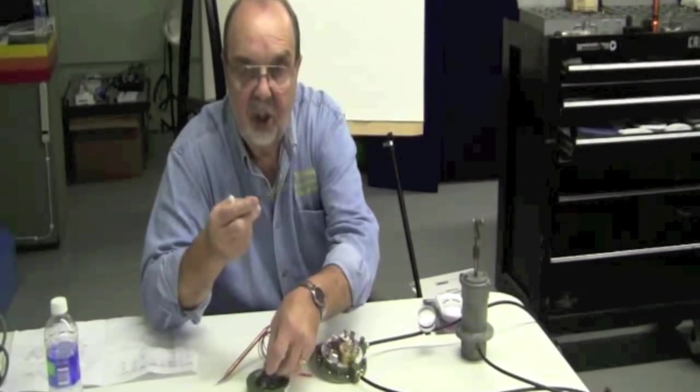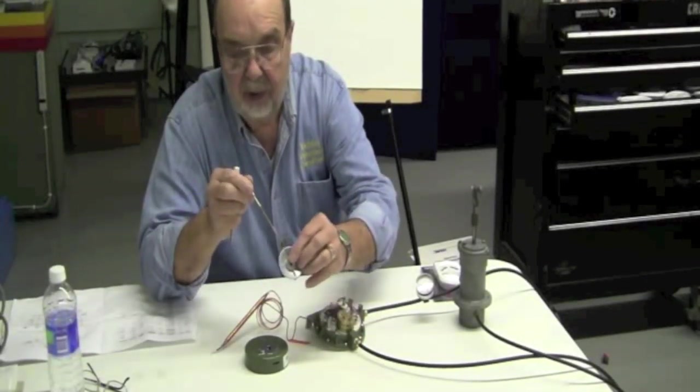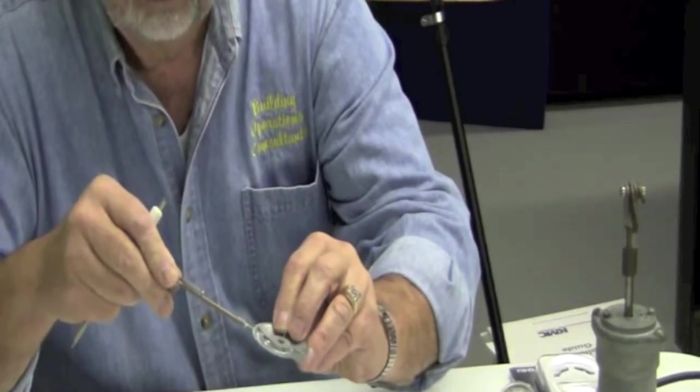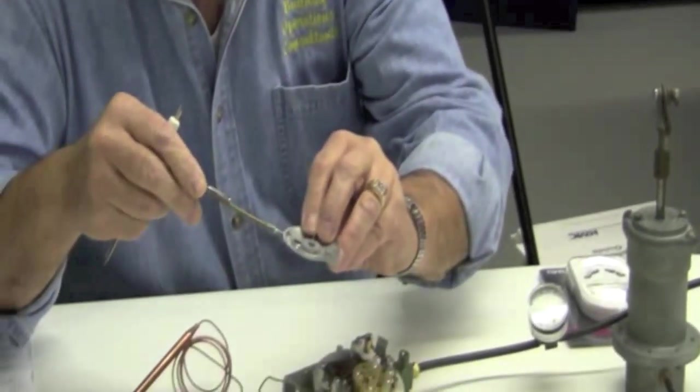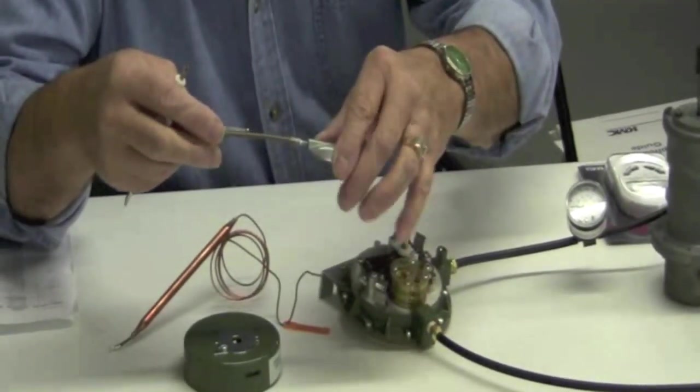I've removed the cover, which requires this Allen wrench to get this set point dial off. You have to put the Allen wrench in. If you notice from the inside here, you have to line that Allen up with an Allen screw on the inside and turn it counterclockwise to get it off.